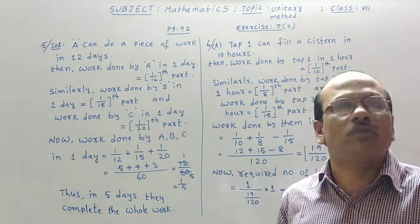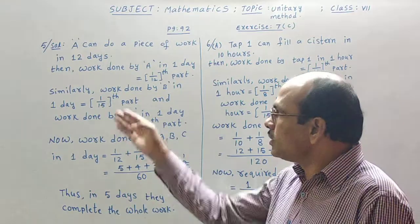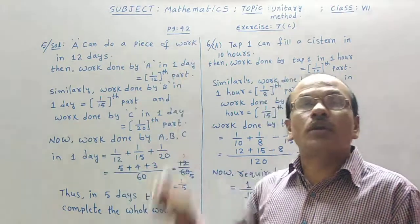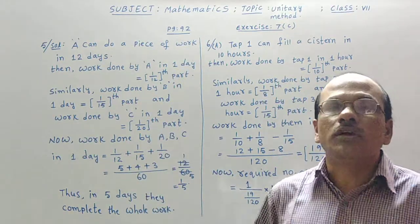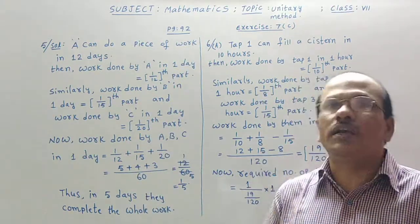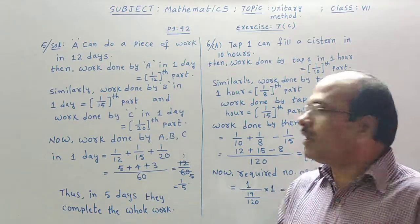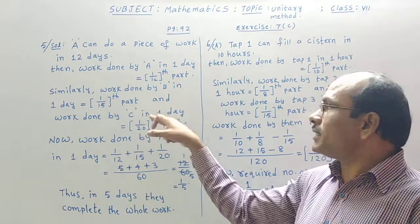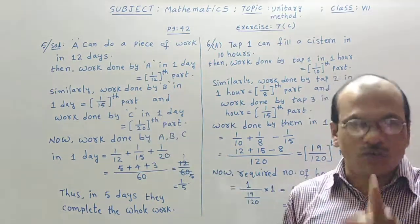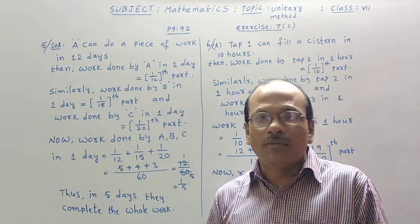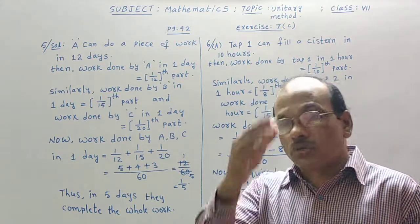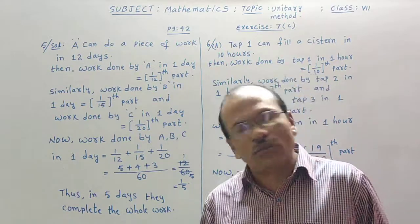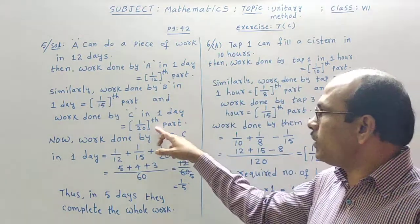Similarly, work done by person B in one day. Because the total work can be finished by B alone is 15 days given. So that in one day, 1 by 15th part. And work done by person C in one day, 1 by 20th part. Am I correct? Because person C needed 20 days of time to complete the whole work they said. So that 1 by 20th part can be in one day.